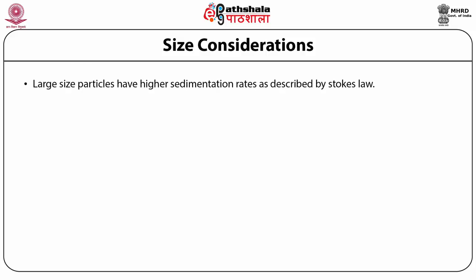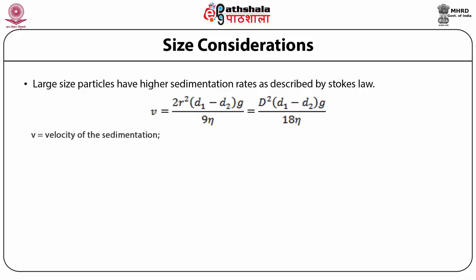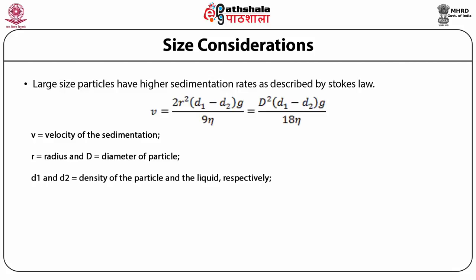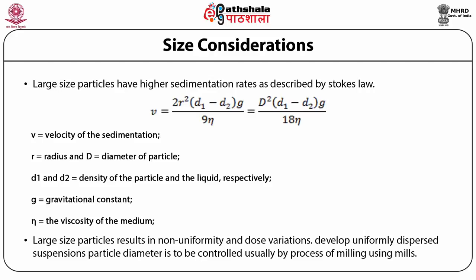Large size particles have higher sedimentation rates as described by Stokes' law, which suggests V equals 2R² multiplied by the difference in density multiplied by gravitational constant, divided by 9η. Alternatively, it can be written as D² multiplied by the difference in density multiplied by gravitational constant G, divided by 18η. In this equation, V is the velocity of sedimentation, R is radius, D is diameter of particle, d₁ and d₂ are the densities of particle and liquid respectively, g is gravitational constant, and η is the viscosity of the medium. Thus, large size particles result in non-uniformity and dose variations.